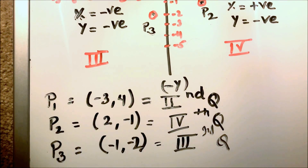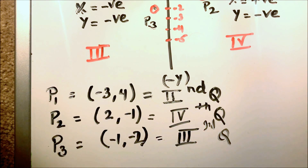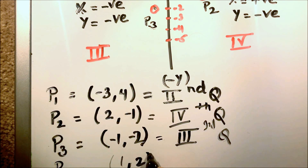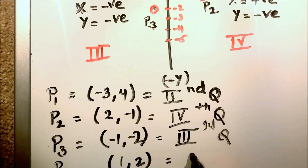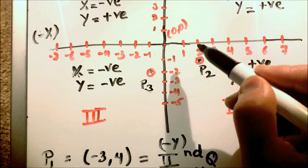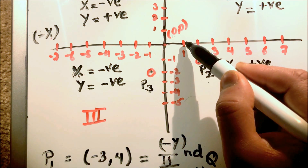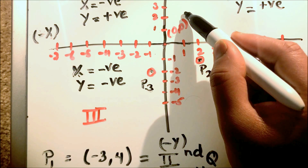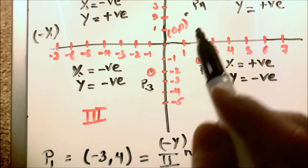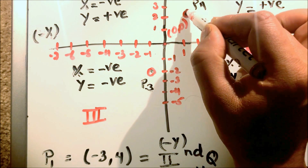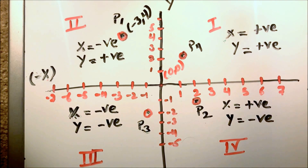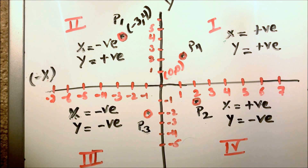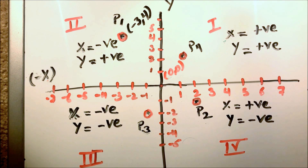If both numbers are positive for P4 — let us take one and two — we can say it is in the first quadrant because we move one distance horizontally and two units up. So this is our point P4, which is in the first quadrant. In this way, we can locate points, and if we join four points on the coordinate plane, we can draw a quadrilateral or rectangle.